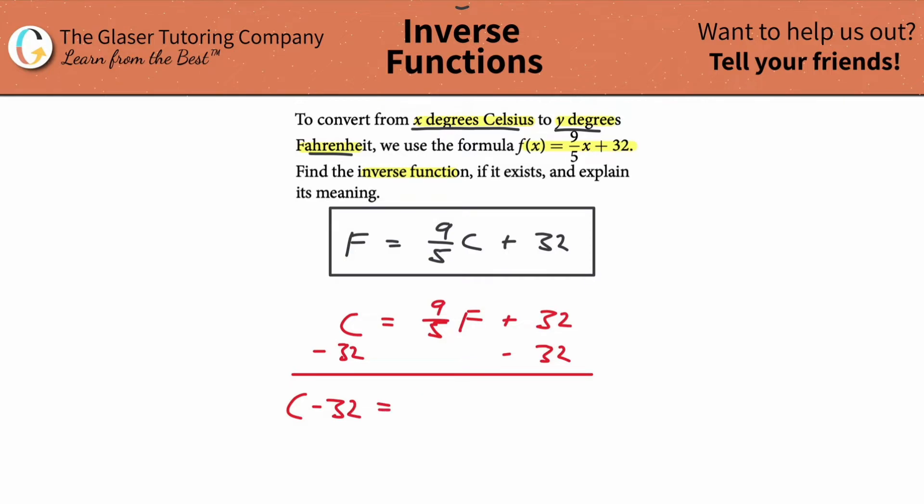Well, what we simply have to do is subtract the 32 from both sides. And now here we're going to get C minus 32 equals 9/5F. Now we have to solve this for F. So what do we have to do? You can divide by 9/5 or multiply both sides by 5/9. When that happens, this cancels, and it leaves me with F equals 5/9 times the Celsius temperature minus 32.